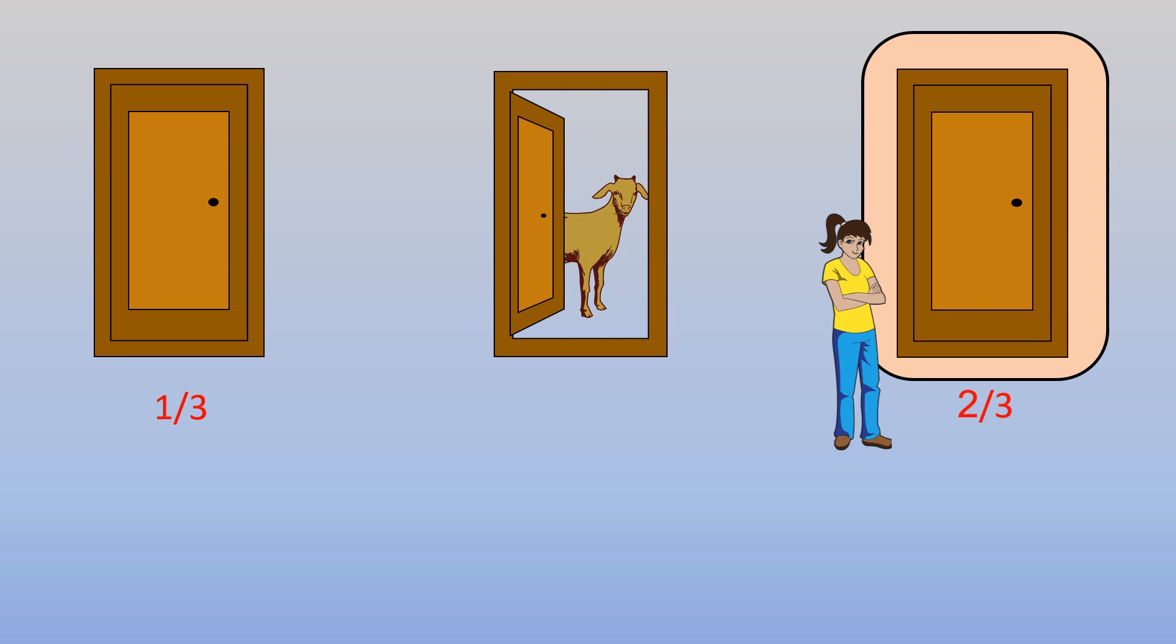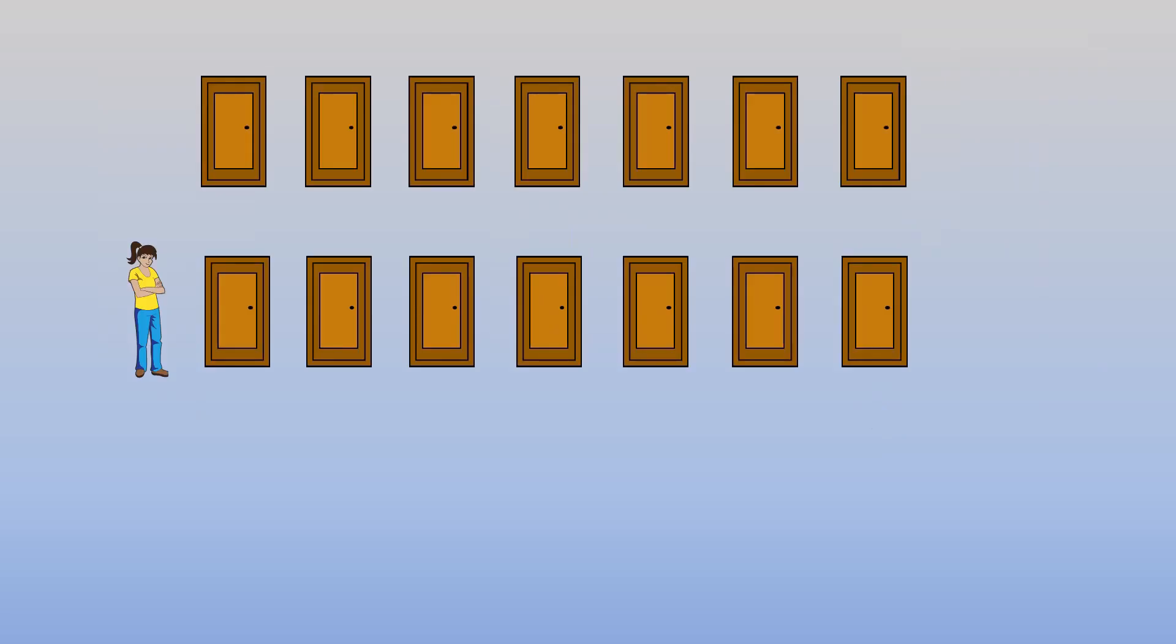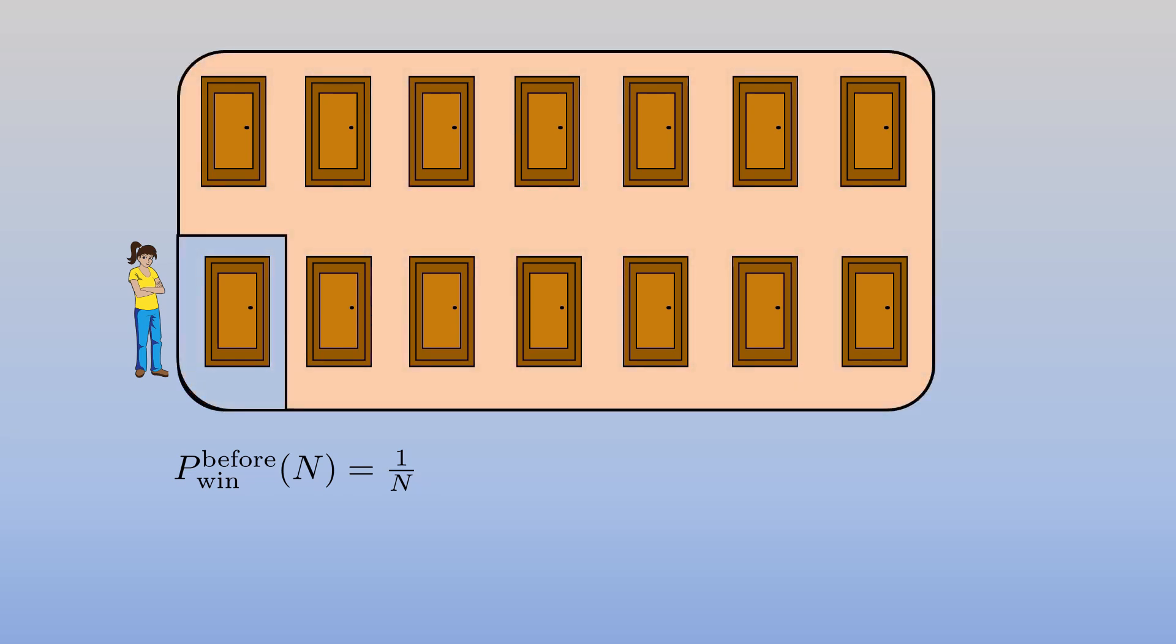We use the same logic for the second problem. Before revealing any goats, the chance of winning the car is equal for all the doors and it is equal to one over N. Let's show it by P_win^before. Now the chance of losing or in other words, the chance of having the car behind one of the doors that you didn't choose is N minus one over N.